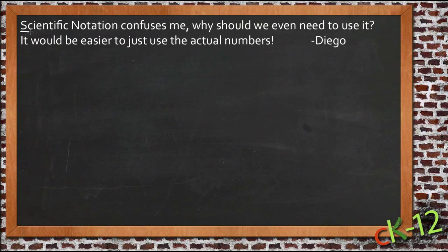All right, so this lesson is scientific notation, and I have a question that was sent in by Diego, which actually is not at all uncommon. I have students that point this out all the time, and they say scientific notation confuses me. Why should we even need to use it? It would be much easier to just use the actual numbers. Now, I imagine some of you other students out there are probably thinking the same thing. Let me see if I can give you a good example for why it really is easier.